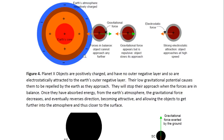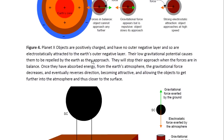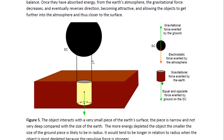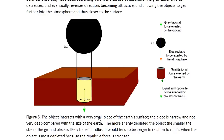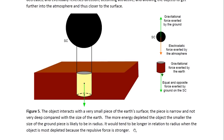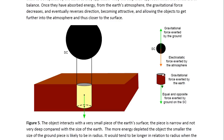Then the object will be able to enter into the Earth's atmosphere, or further into the Earth's atmosphere. The object interacts with a very small piece of the Earth's surface — a small, narrow piece that is not very deep compared with the size of the Earth. The more energy-depleted the object, the smaller the radius of the ground piece is likely to be. It would tend to be longer in relation to radius when the object is most depleted, because the repulsive force is stronger.